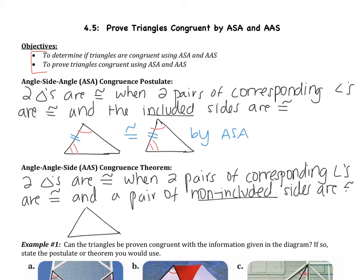Let's draw a picture. I'll mark the same angles congruent as the previous example. With AAS, we have a pair of sides congruent, but they're not the included sides. The sides in blue at the top were the included sides. If I choose these other sides to be congruent, the triangles are congruent by AAS — still two pairs of angles and a pair of sides, but not the included sides.